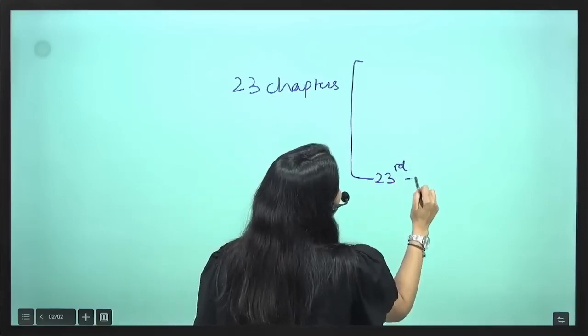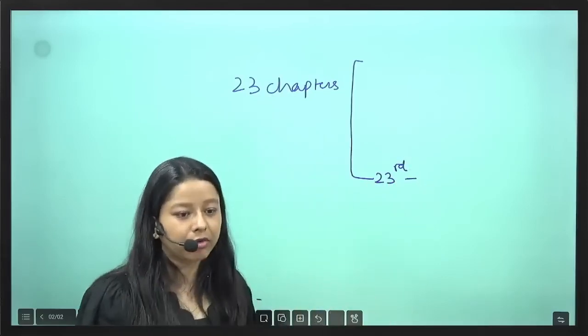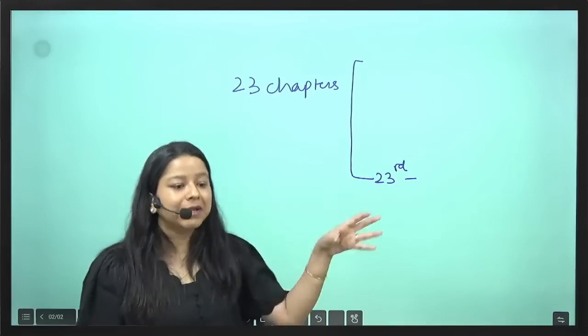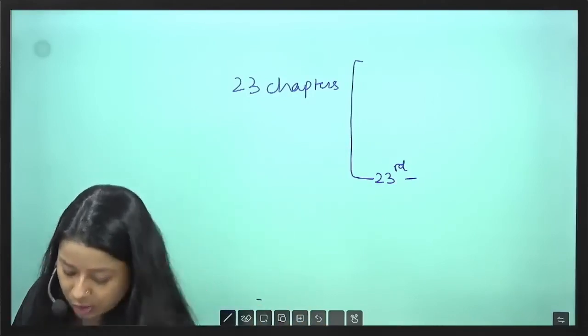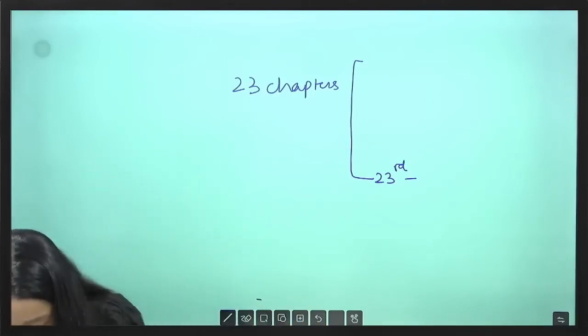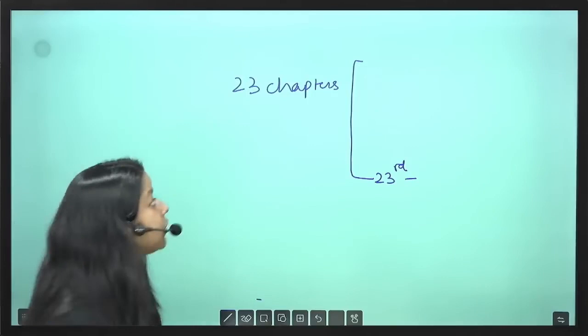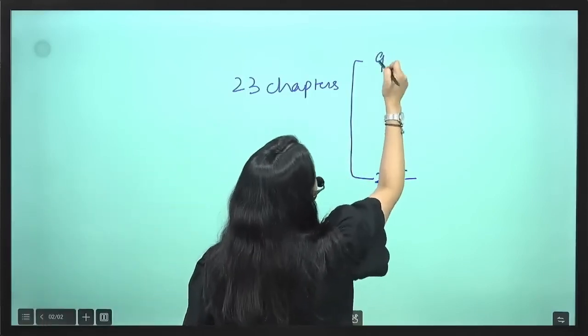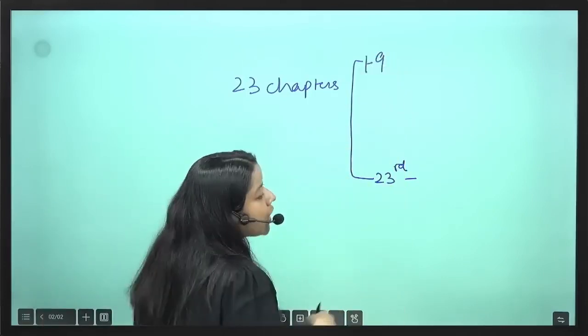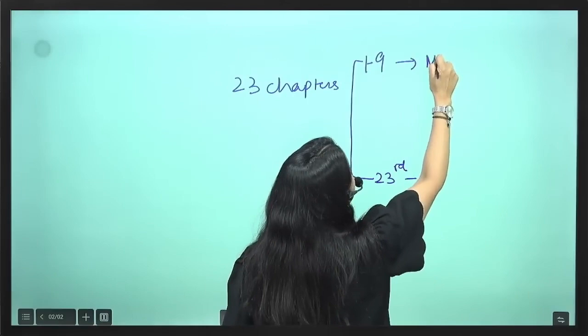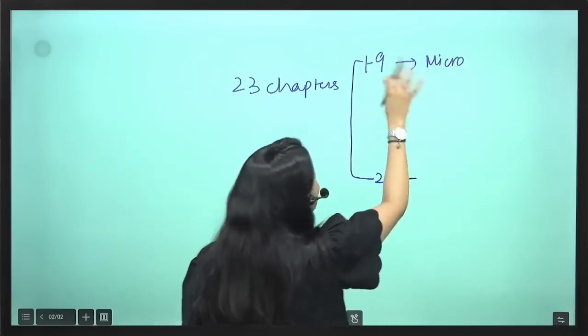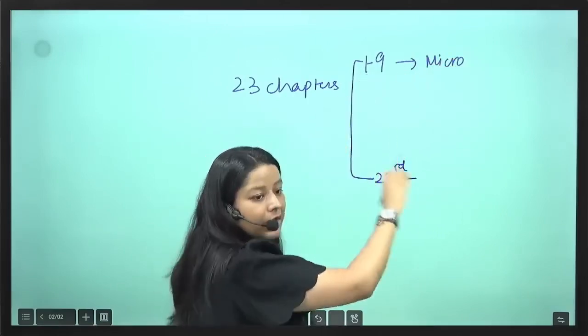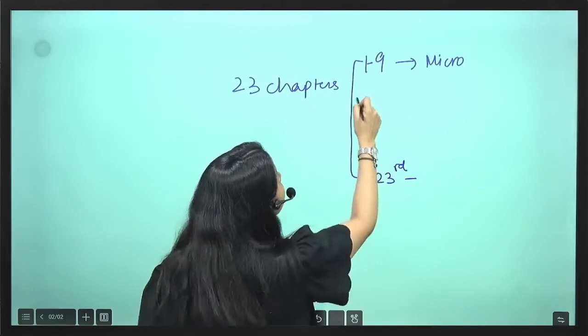The 23rd chapter is a quick summary of the entire topic that you have studied, plus there are some new topics which they include. Apart from this we have the first 9 chapters. The first 9 chapters are mostly dealing in microeconomics and the rest 10, from 10 to 22, are macroeconomics. So let's look at the weightage.